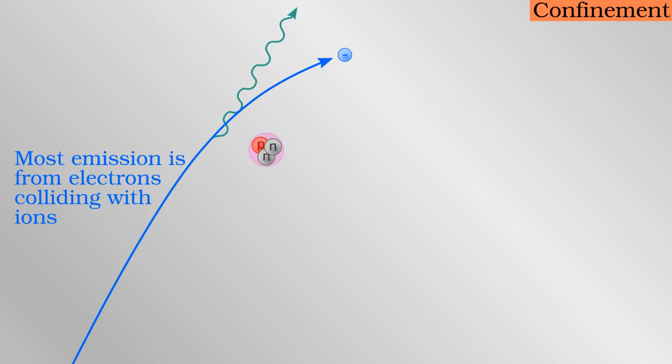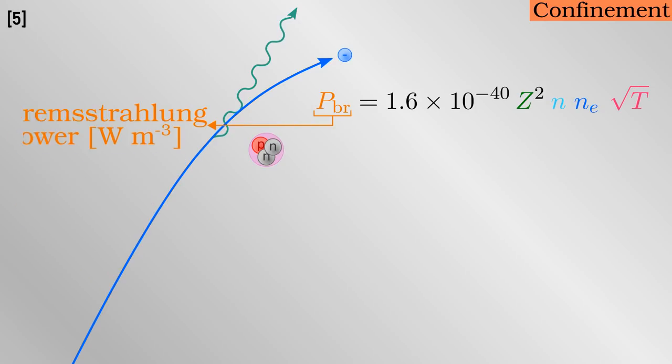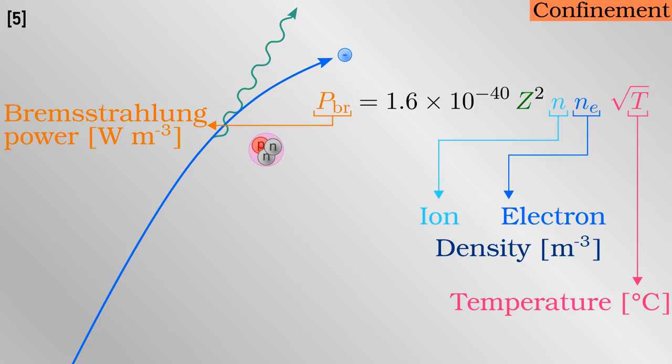The electrons, being lighter and more mobile than ions, are responsible for most of this emission. The power lost due to bremsstrahlung depends on the densities of ions, electrons, and the temperature of the plasma. I have said that controlled fusion aims to maximize the triple product, but the issue of bremsstrahlung means that there is somewhat of a trade-off between the energy confinement time and the other two parameters.